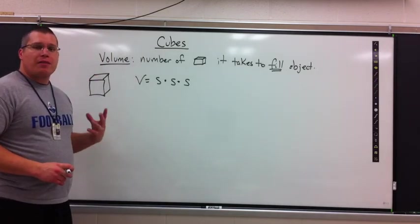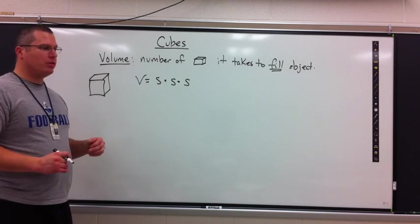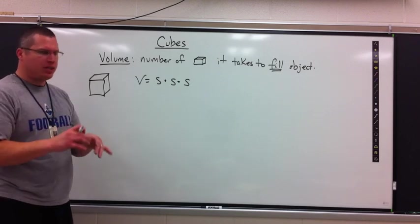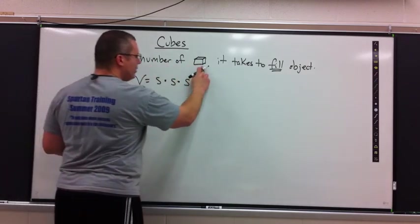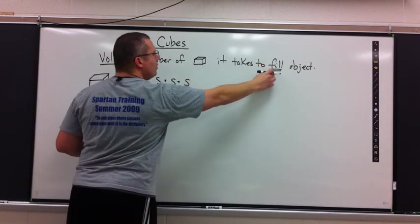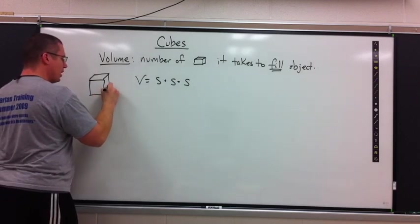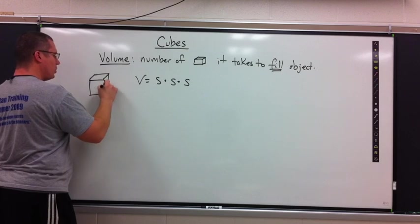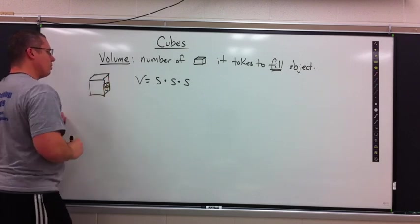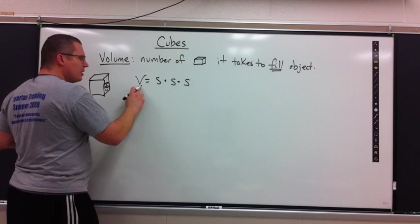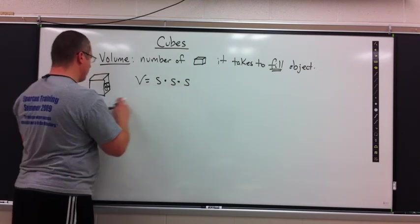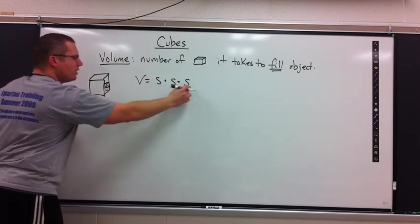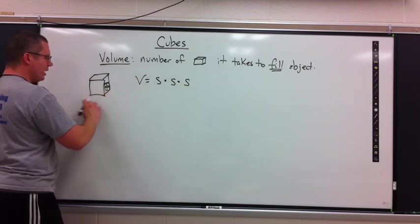Now, we can also take a look at the volume of a cube. That seems redundant. Volume is the number of cubes, the number of cubes in a cube. Volume is the number of cubes it takes to fill an object. So inside this object, how many little cubes does it take to fill it? The formula is volume V equals S times S times S. It should make sense. Length times width times height. But it's all S because it's all the same length in a cube.